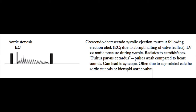The aortic stenosis murmur is a crescendo-decrescendo systolic ejection murmur. Generally, what you'll hear with aortic stenosis is an ejection click, and this ejection click occurs immediately after S1. The ejection click is due to abrupt halting of the valve leaflets. This murmur is called crescendo-decrescendo because the left ventricular pressure is much greater than that of the aortic pressure at mid-systole compared to end-systole, and therefore the murmur starts off pretty loud and then becomes softer throughout systole.